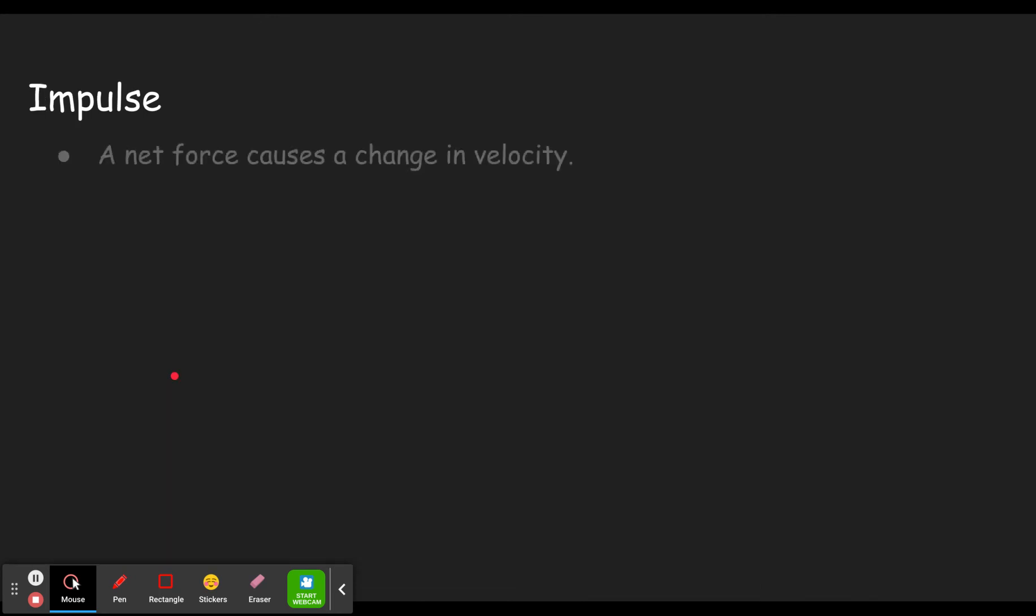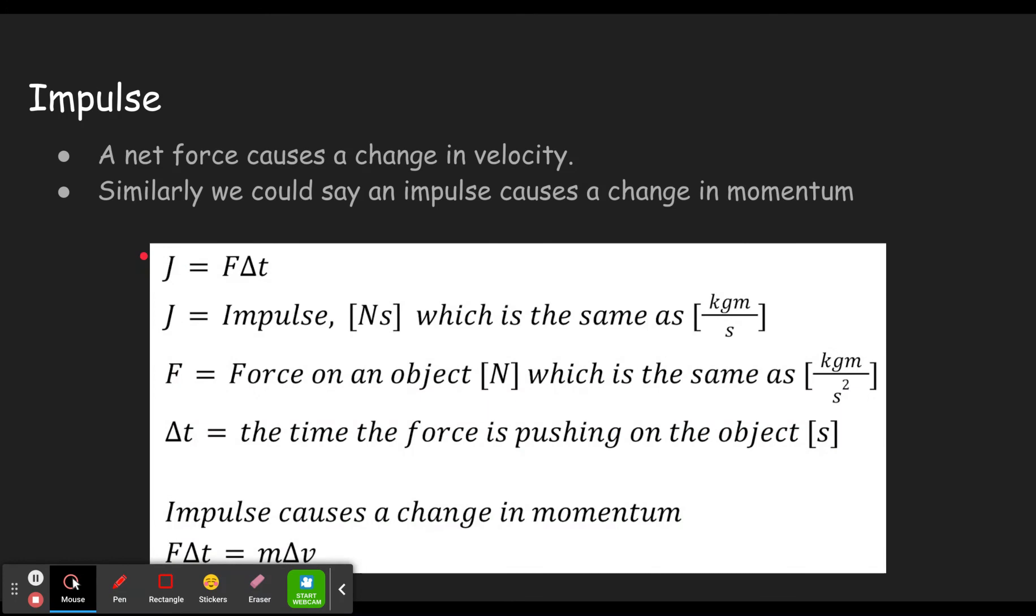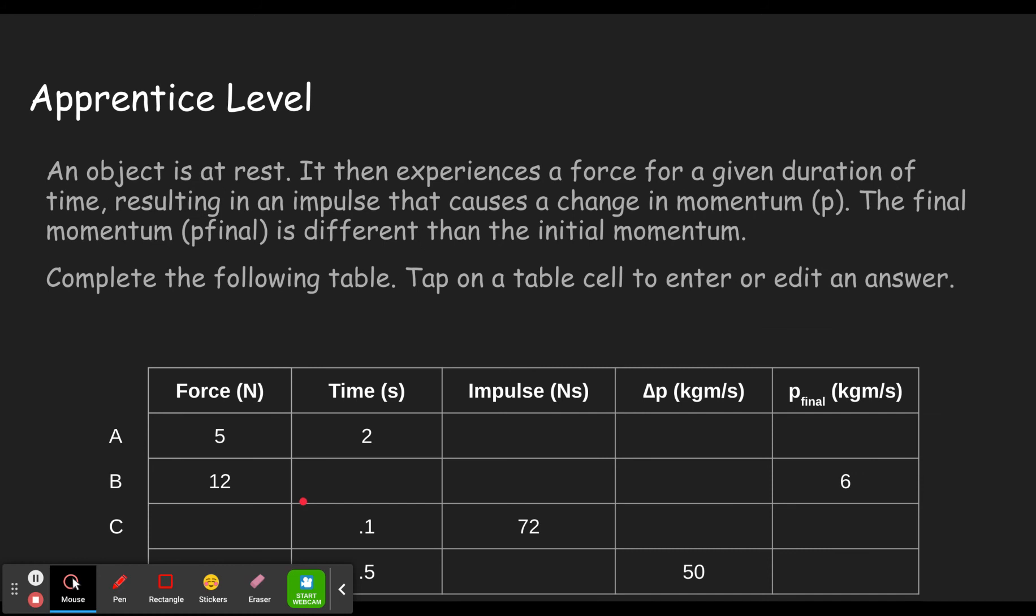Then impulse. Impulse causes a change in momentum. Impulse, which is capital J here, is a force acting for a certain amount of time and it causes a change in momentum. We're going to use both those concepts, force times time, and that an impulse causes a change in momentum. In other words, however much impulse there is, that's how much the momentum changes.